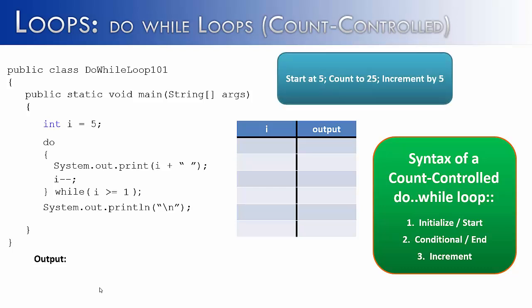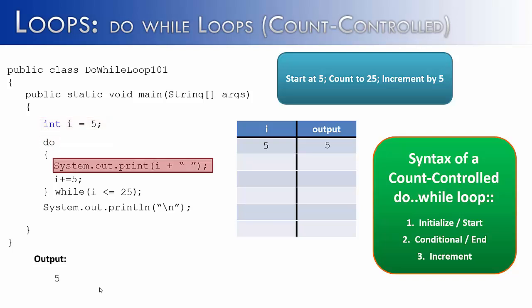Next, what if we wanted to start at 5 and count up to 25, but instead of counting by 1s, we wanted to count by 5s? int i would still equal 5, because we're starting at 5. Instead of i greater than or equal to 1, i would be less than or equal to 25. And instead of i--, we'd say i plus equals 5, or i equals i plus 5. So we start the loop with i equal to 5, go to the do statement, and it automatically runs. System.out.print(i), so the first output would be 5.